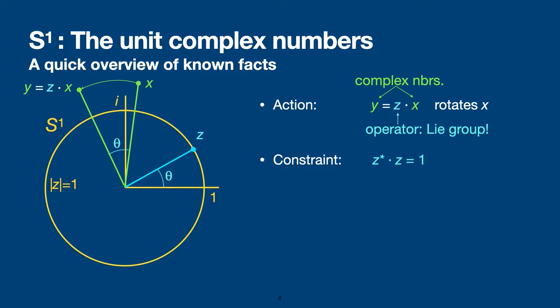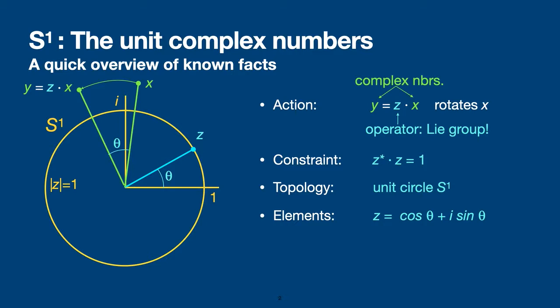You can look at the shape of the points satisfying this constraint and this shape is a circle — a one-dimensional line, the unit circle in the complex plane. The elements of this unit circle can be written as Z equals cosine of theta plus i sine of theta, where theta is precisely the angle by which Z rotated X. You can compute an inverse of this unit complex number using the conjugate.